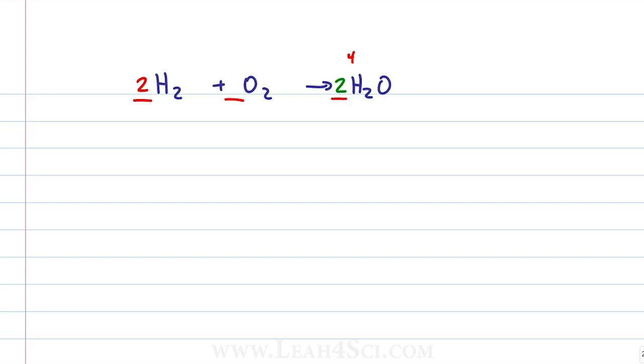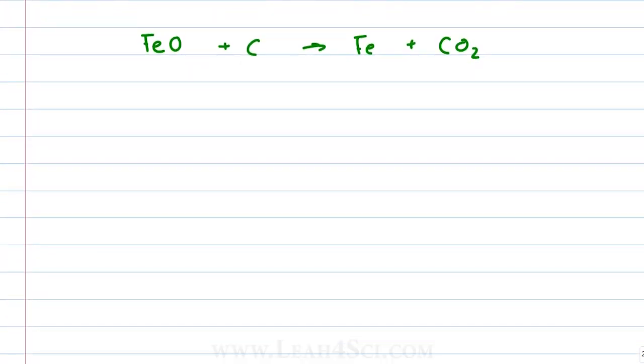This method of going back and forth worked for a simple reaction like this but what if it's a little bit more complicated? Say you're asked to react iron oxide with carbon to give you iron plus carbon dioxide. Once again, we can do the back and forth method where we guess but in this case, I'm going to urge you to take a few extra seconds and write out a checklist. This will keep you organized.